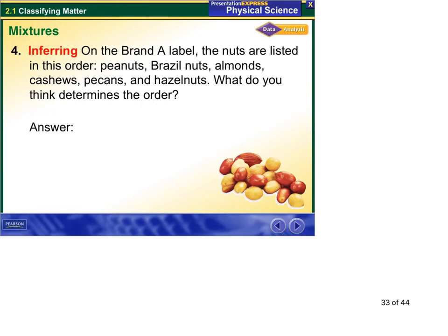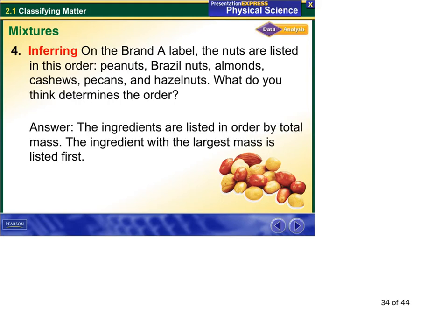And then they say the masses are listed in this order: peanuts, Brazil nuts, almonds, cashews, pecans, and hazelnuts. What do you think determines the order? The order is determined by the largest mass first. Order of mass.